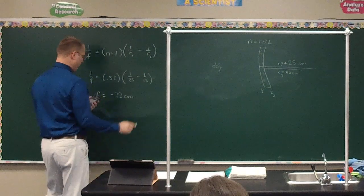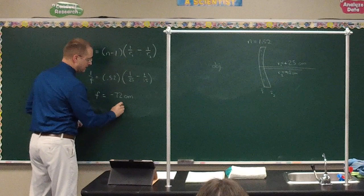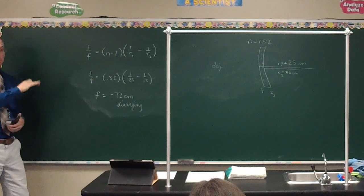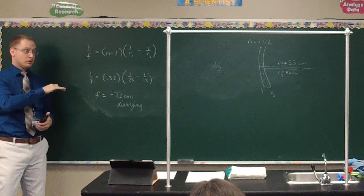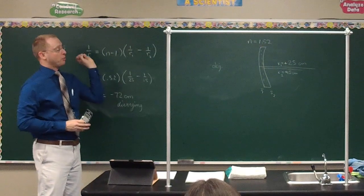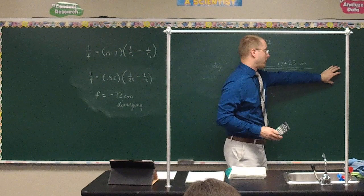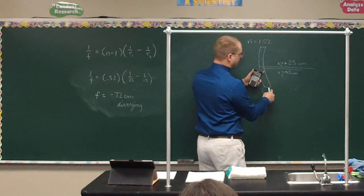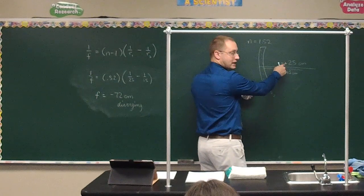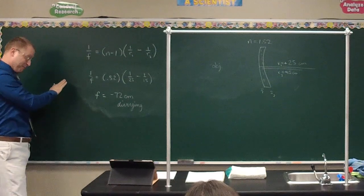Both radii are going away from the object in that configuration. If the object had been on the other side, both radii would have been negative: the 15 would have been R1 negative, and the 25 would have been R2 negative. The math still works out the same in the end — it would just be one over negative 15 minus one over negative 25 instead, plugged in a little differently.